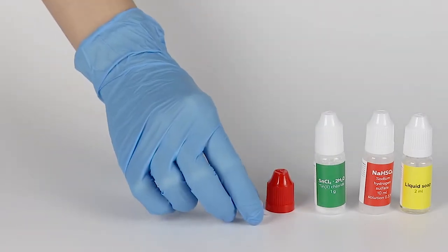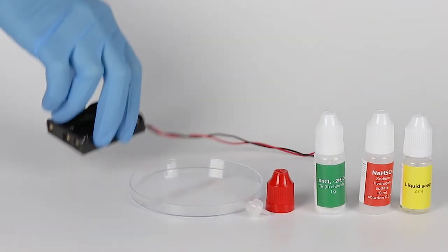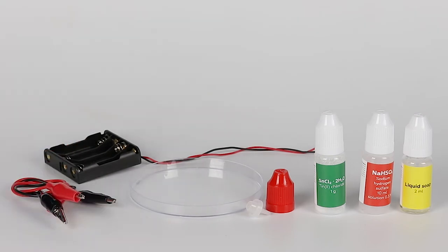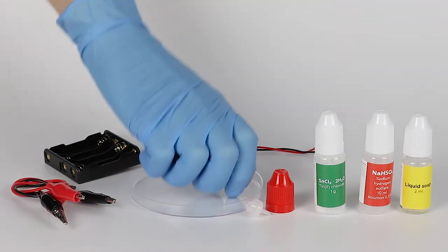For the Tin Dendrite experiment, you will need liquid soap, sodium hydrogen sulfate solution, tin chloride, a red cap, a tip, a petri dish, a battery holder, and crocodile clip wires. Prepare four AAA batteries in advance.